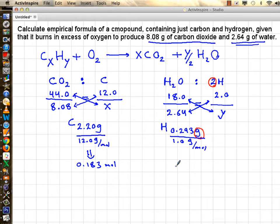In order to calculate the simplest whole numbers, I'm going to divide by the smallest of the two numbers, which is 0.183. Now you have one carbon and hydrogen becomes 1.6.